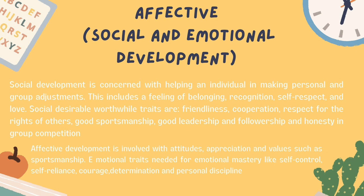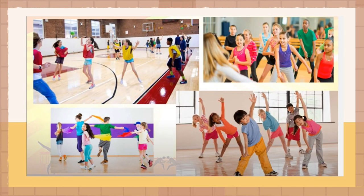Affective development is involved with attitudes, appreciation, and values such as sportsmanship. Emotional traits needed for emotional mastery include self-confidence, self-control, self-reliance, courage, determination, and personal discipline. Physical education can help to develop or enhance students' social and emotional traits like cooperation, respect, self-confidence, and discipline as they engage in different activities.